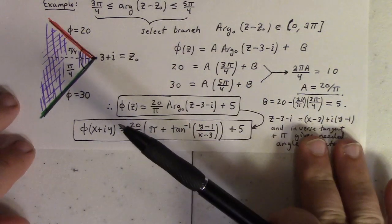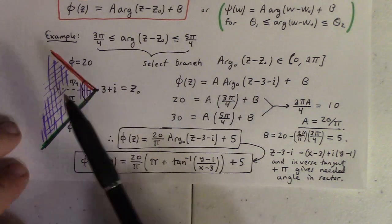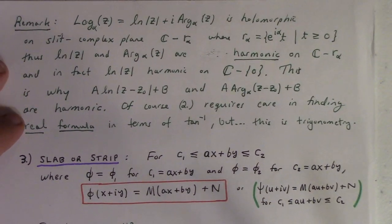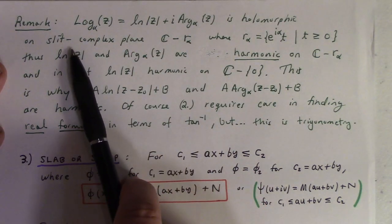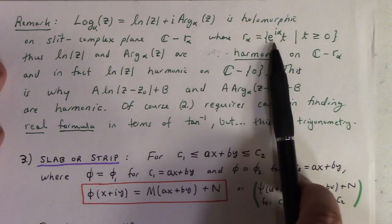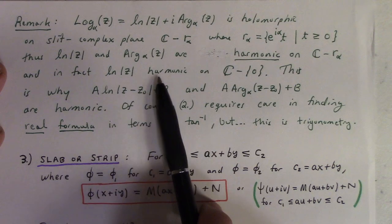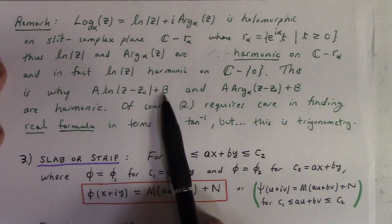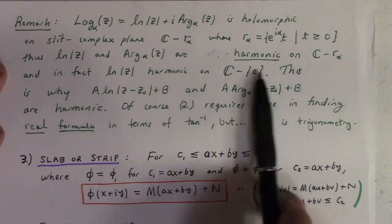You can also use this sector technique for a half plane. Now, why are these two template solutions harmonic? It's because the logarithm — the log branch with angle cut α — is holomorphic in the slit complex plane, removing the ray at angle α. So log|z| and arg_α(z) are harmonic on that slit plane. Multiplying by a constant or adding a constant preserves harmonicity. Case two requires care when writing the real formula using inverse tangent — that's a pain, but you have to deal with it.